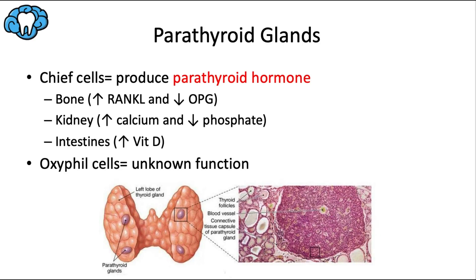The parathyroid glands are four tiny glands located on the posterior surface of the thyroid gland — two on the left lobe and two on the right lobe. They're made up of two types of cells called chief cells and oxyphil cells. The chief cells secrete parathyroid hormone, which regulates the amount of calcium in our bodies.